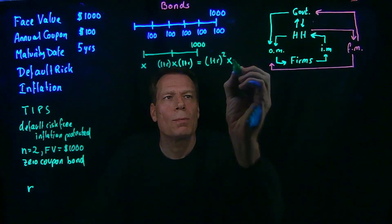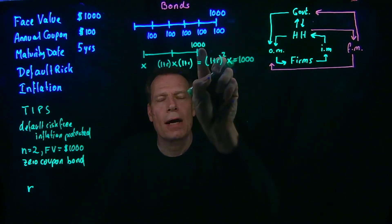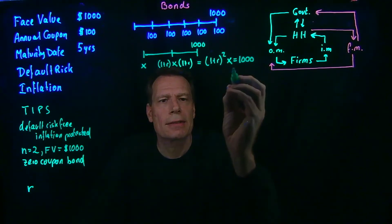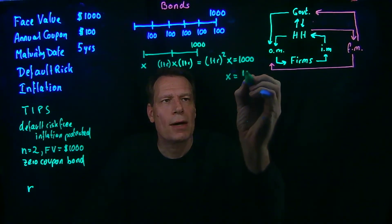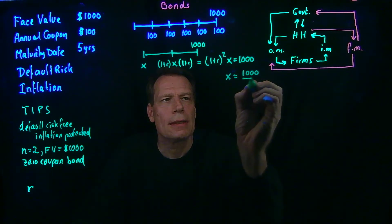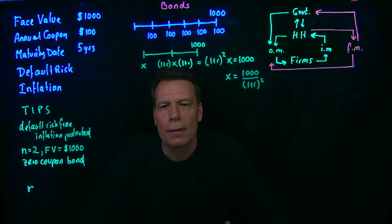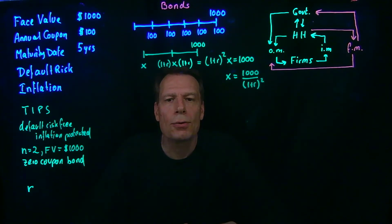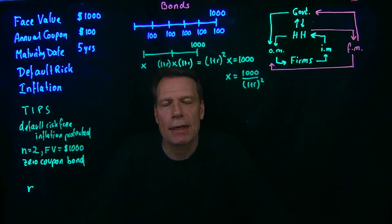So now we have an equation that says the balance at the end of two years is going to be (1 + R)² times X. We're asking: what would X have to be if we wanted that balance to be $1,000 two years from now? We can solve for X and get that X is equal to $1,000 divided by (1 + R)². So in order to have $1,000 in your inflation-protected, risk-free savings account two years from now, you have to put this amount into that savings account today.